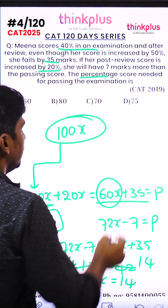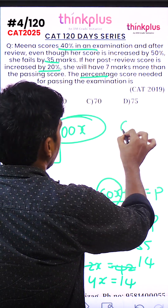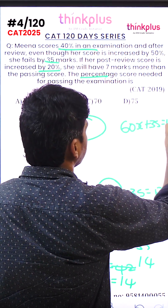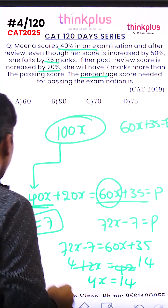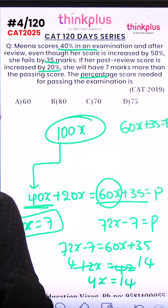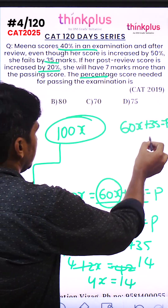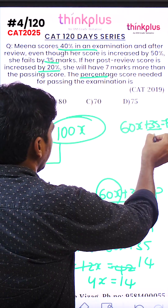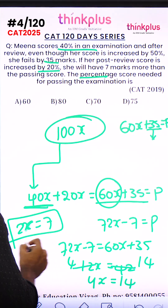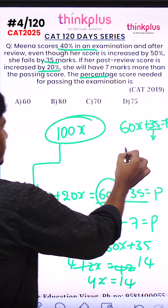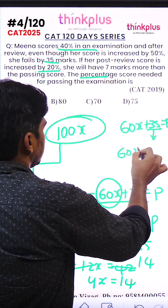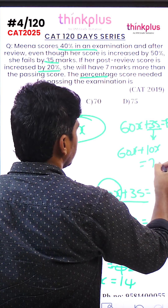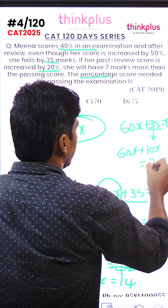The pass mark is 60x plus 35. Since 2x equals 7, we get 35 equals 10x. So replacing 35 with 10x: 60x plus 10x equals 70x. The pass percentage is 70x out of 100x, which is 70%.